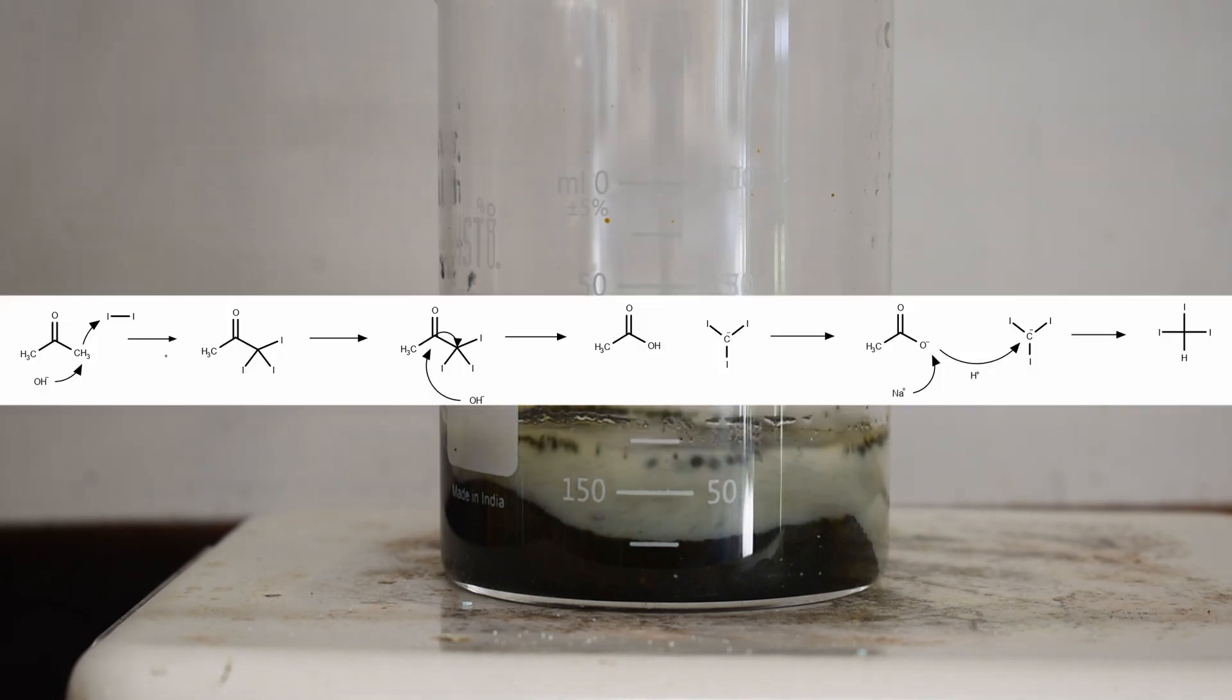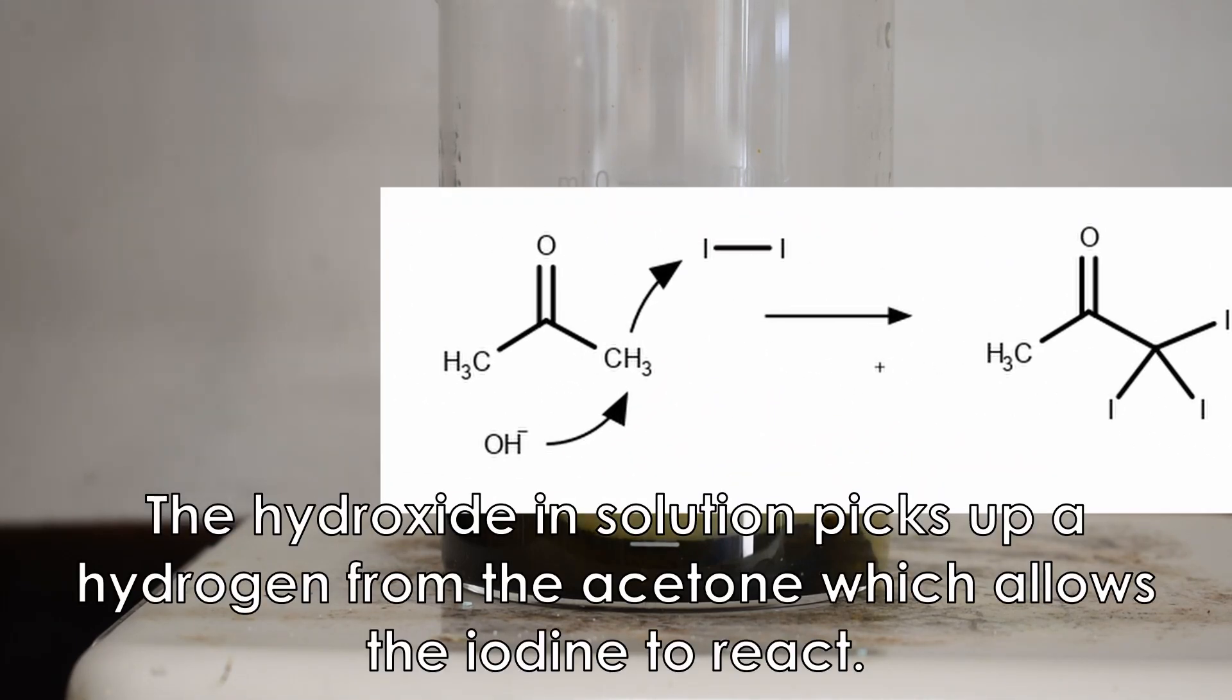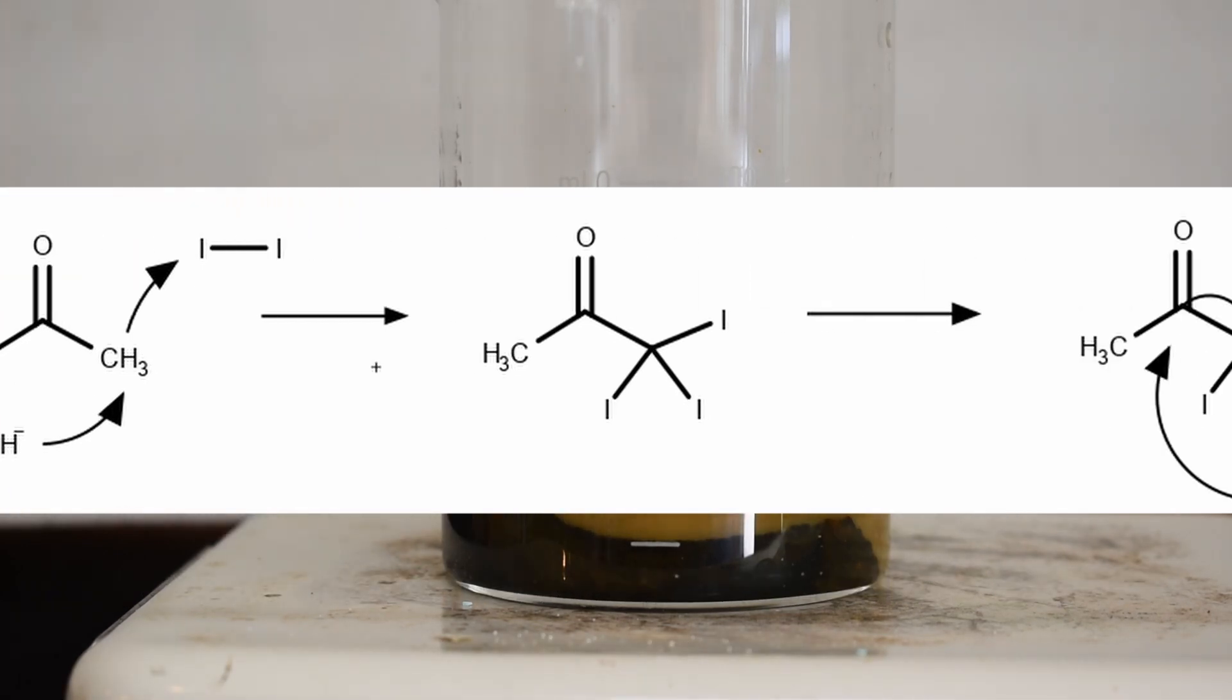So what's happening here is the haloform reaction. Basically the elemental iodine is reacting with the acetone to form a tri-iodo acetone intermediate.